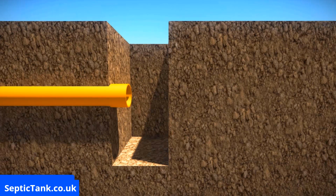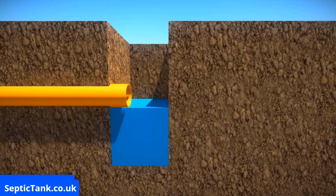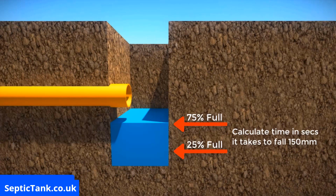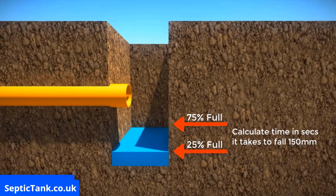The next day, refill the hole once again with water to a depth of at least 300 millimetres, then observe the time in seconds that it takes for the water to seep away from 75 percent full to 25 percent full — that's roughly a fall of about 150 millimetres.